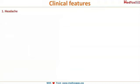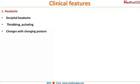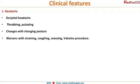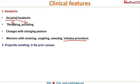To summarize, the four causes of papilledema are: intracranial space-occupying lesions, idiopathic intracranial hypertension, meningitis, and hemorrhage (subarachnoid or intracerebral). Regarding clinical features, the first is headache — it is occipital, of throbbing or pulsating type, and worsens with change in posture and with Valsalva maneuvers such as straining, coughing, or sneezing.